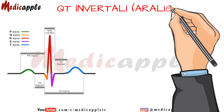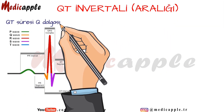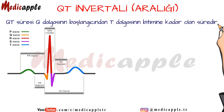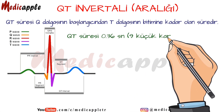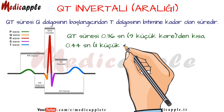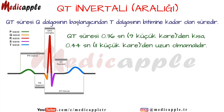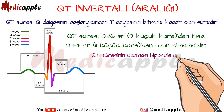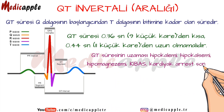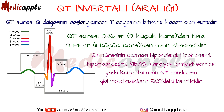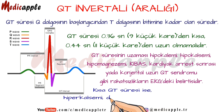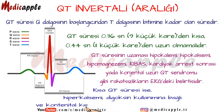QT interval. QT duration is the time from the beginning of the Q wave to the end of the T wave. It should not be shorter than 0.36 seconds (9 small squares) and should not be longer than 0.44 seconds. QT prolongation is the ECG symptom of disorders such as hypokalemia, hypocalcemia, hypomagnesemia, LBBB, post-cardiac arrest, or congenital long QT syndrome. Short QT interval can be seen due to hypercalcemia, digoxin use, and congenital short QT syndrome.